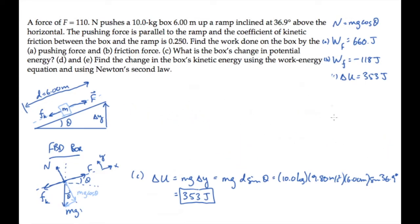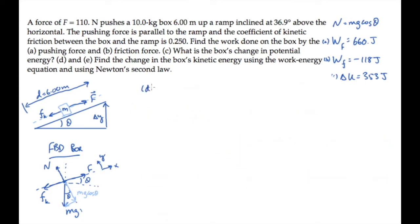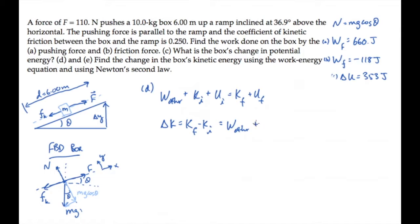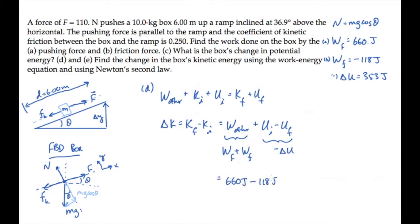Part D asks us for the change in the box's kinetic energy using the work-energy equation. Solving for the change in kinetic energy, kf minus ki, we find it equals the work done by other forces plus the initial gravitational potential minus the final. Work done by other forces is the work done by the pushing force f plus the work done by friction, and ui minus uf is minus delta u. Substituting numbers, delta k is 189 joules — the change in the box's kinetic energy as it moves up the ramp.